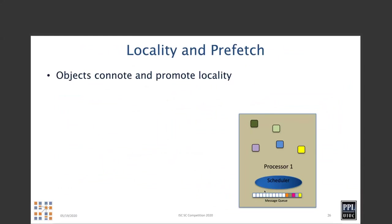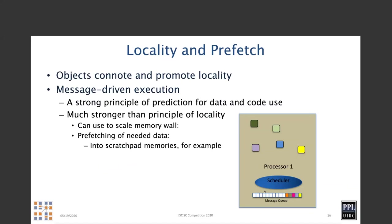The fact that the scheduler can look at the queue and know what are the next few things that will execute gives it an ability to prefetch data — into faster memories like high-bandwidth memories if necessary, or even for out-of-core execution. Prefetching is enabled by the scheduler's ability to peek at what's coming next.